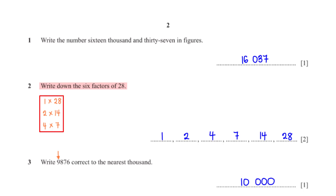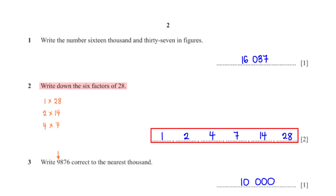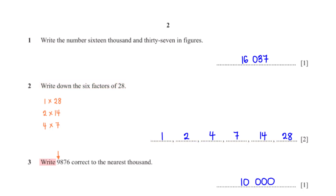we first need to list the numbers that multiply to give us 28. From this we see that the factors of 28 are 1, 2, 4, 7, 14, and 28.